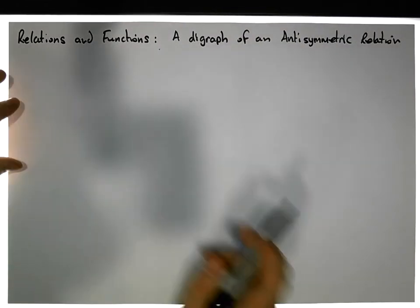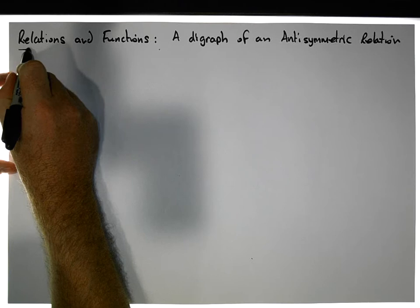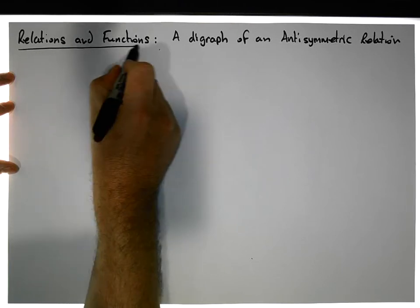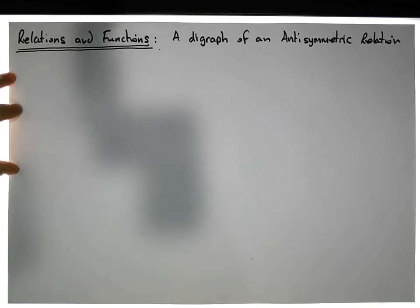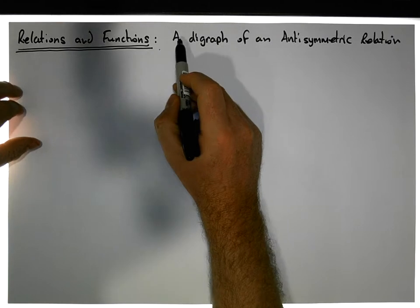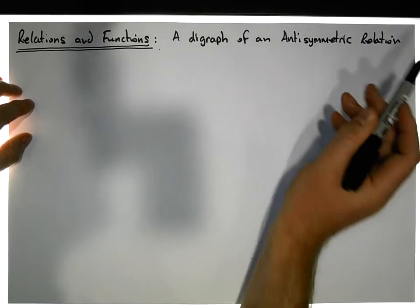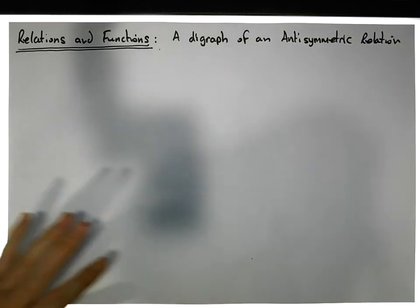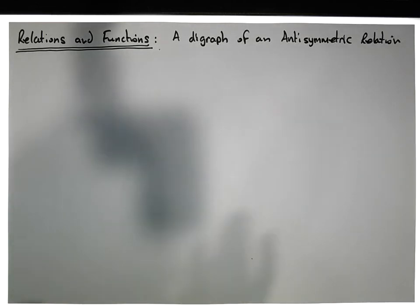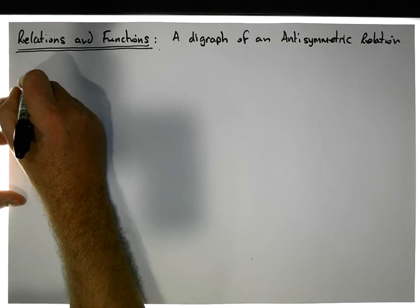Hi guys, this is Jonathan Lambert with the Mathematics Development and Support Service at National College of Ireland. In this short video, another in our series dealing with relations and functions, we're going to concentrate on what the digraph of an anti-symmetric relation looks like. In the video just before this we looked at an asymmetric relation; in this one we're going to look at an anti-symmetric relation.